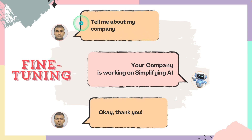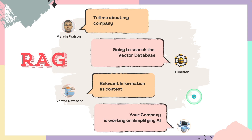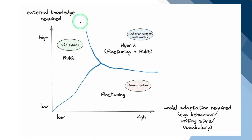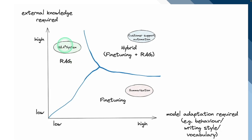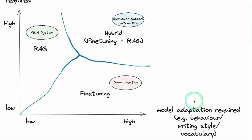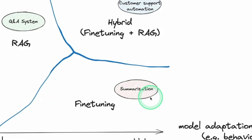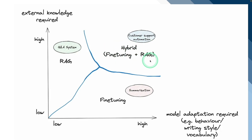In regards to fine-tuning, if you ask the same question — 'tell me about my company' — it's going to give a direct response: 'Your company is working on simplifying AI.' So what is the difference between RAG and fine-tuning, and when do we need each? RAG is needed when you have external, dynamic data — for example, a QA system. Fine-tuning is needed when you want to change the type of response from the model — that is behavior, writing style, and vocabulary — or when you have specific data to feed in. You teach the large language model how to respond. An example use case is summarization. The hybrid approach combines fine-tuning and RAG together, which is more efficient for customer support automation or chatbots. Abacus AI ChatLLM for Teams simplifies this entire process with no code.